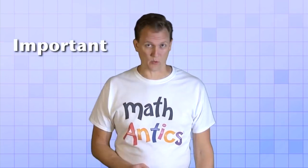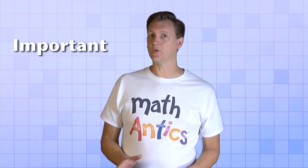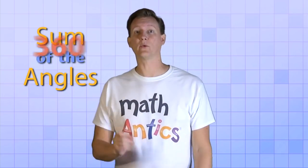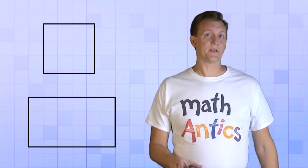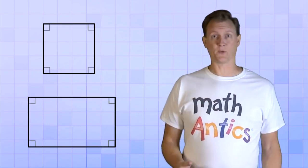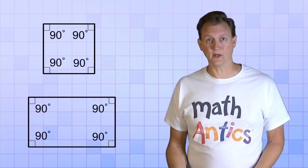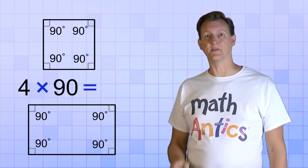But there is one more really important thing you need to know about quadrilaterals. You need to know that the sum of the angles of a quadrilateral is always 360 degrees. Now that's pretty obvious for a square or a rectangle. Those shapes have four right angles. And since we know that a right angle is 90 degrees, 4 times 90 gives us 360.